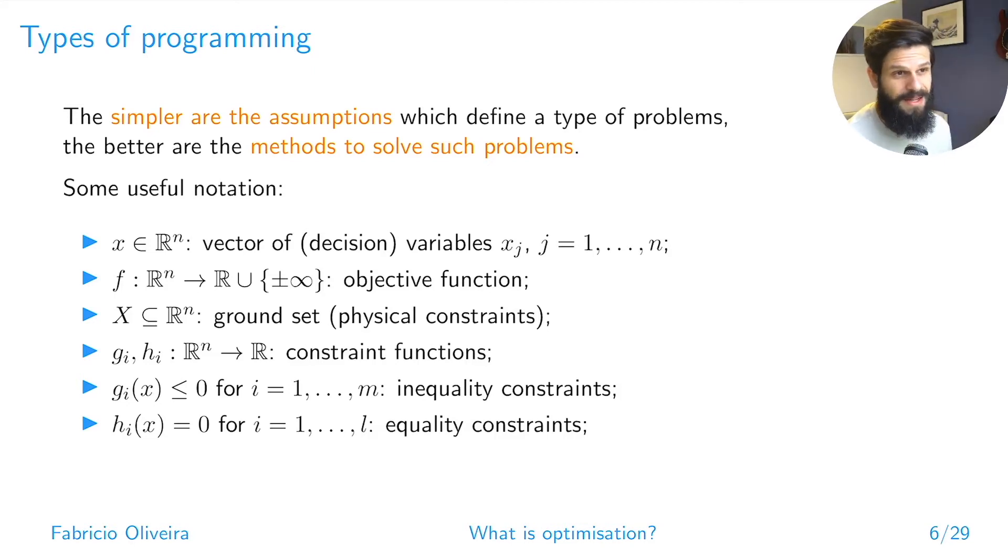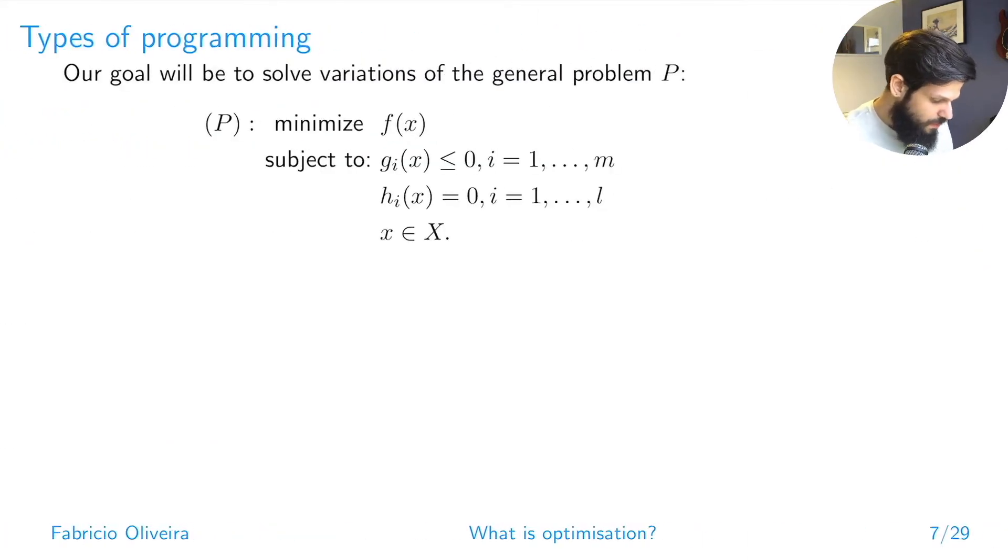With this notation, I can define and classify the types of mathematical programs we're going to be looking at in this course. We'll always be looking into variations of problems of that structure: a problem where we minimize or maximize an objective function f with our decision variables x, and this minimization is subject to observing constraints of the form g and constraints of the form h, so g less or equal than 0, h equal to 0. Of course there can be some constants, but for the sake of generality we tend to put the constants built in g and h.